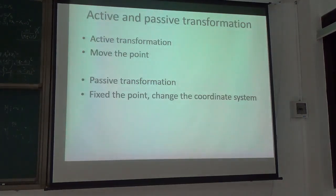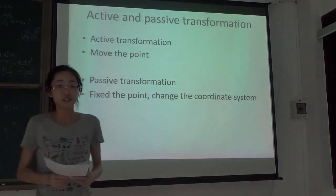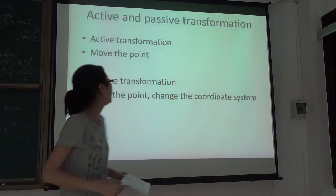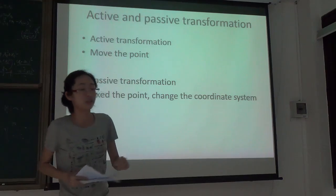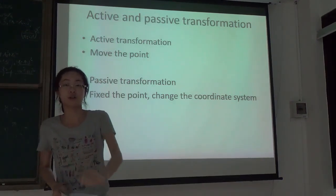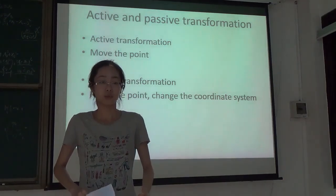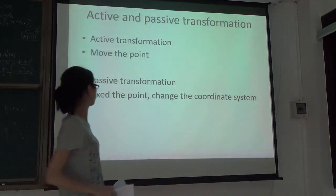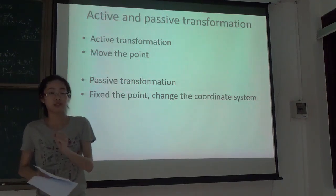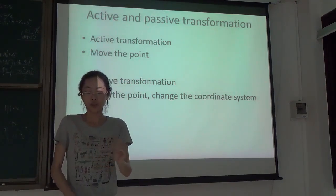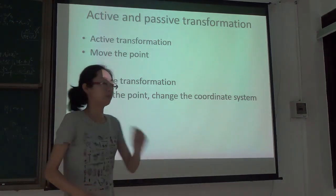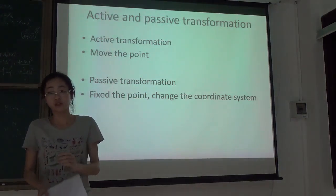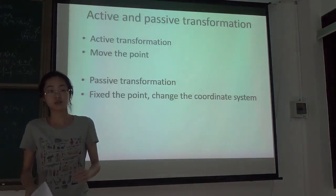To state clearly what is active transformation and what is passive transformation, and to remind those of you who don't remember: active transformation is the procedure where we move the particle and keep the coordinate system the same. While passive transformation is the procedure where we fix the position of the point and change the coordinate system instead, so the position itself is fixed but its expression under the coordinate system changes.